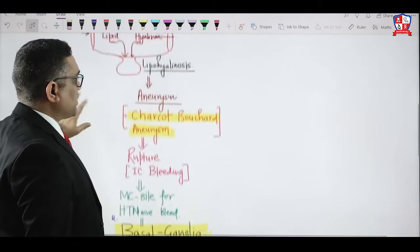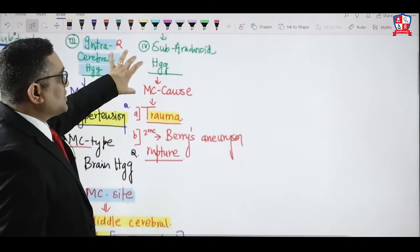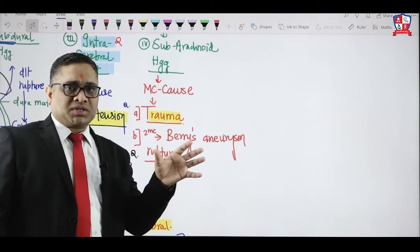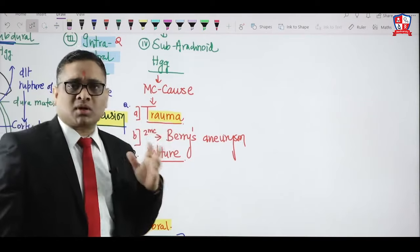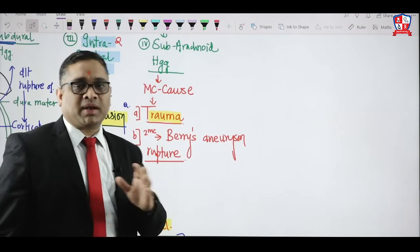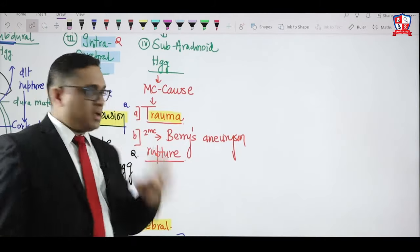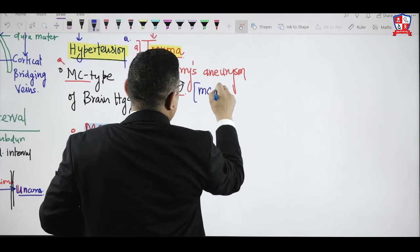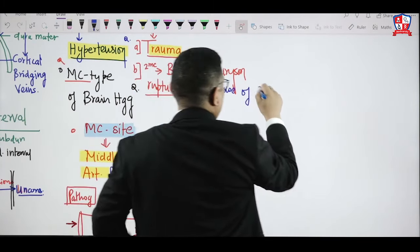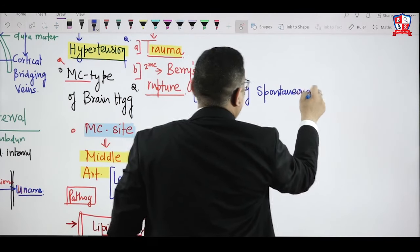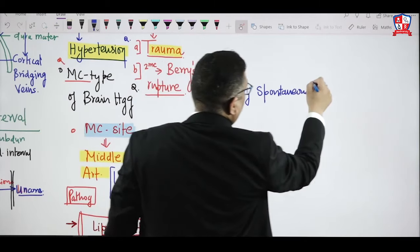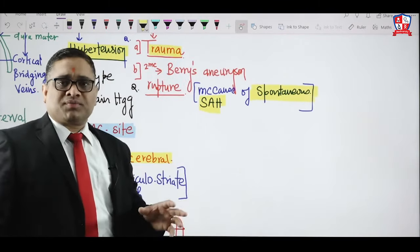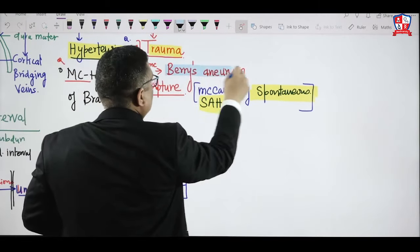Now focusing on subarachnoid hemorrhage: the most common cause is trauma, and the second most common is berry's aneurysm. Pay attention to the language of the question. If the examiner asks what is the most common cause of spontaneous subarachnoid hemorrhage, the word 'spontaneous' is very important — then berry's aneurysm becomes the most common cause.